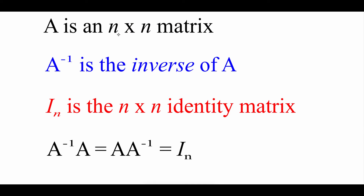Let's say that matrix A is an nxn square matrix. We would represent its inverse with A to the negative 1 power. We talked about the identity matrix in the last video — a square matrix with 1s running along the main diagonal and 0s everywhere else. When we take a matrix times its inverse in either order, either A⁻¹ times A or A times A⁻¹, we should get an identity matrix back. That's how we confirm that things are inverses.